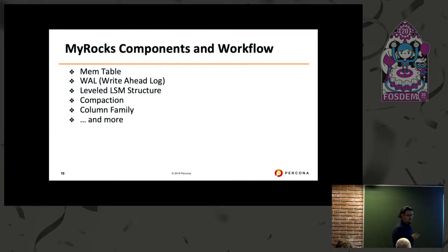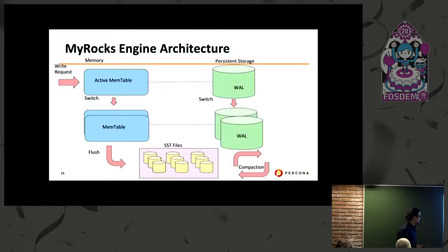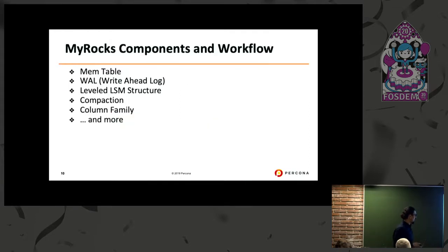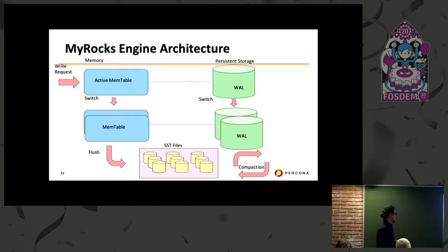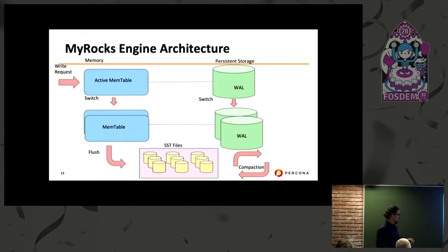Going back to the components of MyRocks: we have the memtables and the write-ahead log, which go along together, and then the leveled LSM-tree structure that does the data writing. Compaction happens in the background. For logical partitioning we also have column families. When a write request comes in, the active memtables are written immediately along with the write-ahead log, then flushed to sorted SST files, and compaction happens at that level. This allows fast writes and sorted files to be available on disk.